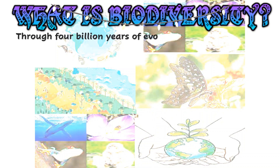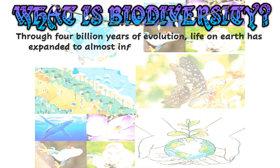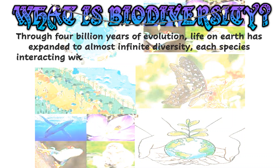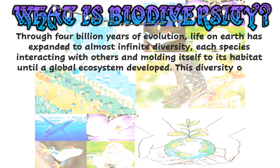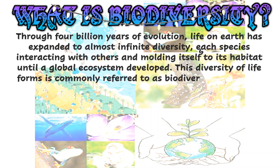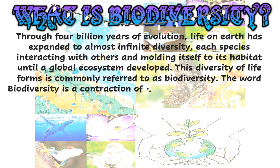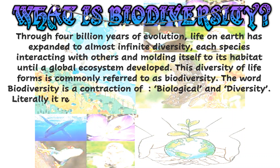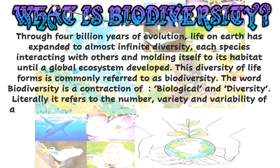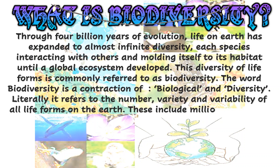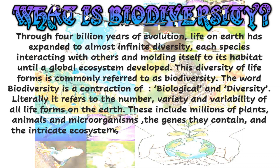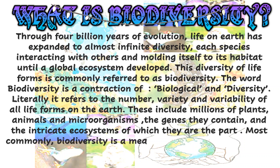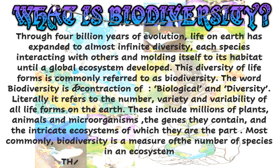What is biodiversity? Through four billion years of evolution, life on earth has expanded to almost infinite diversity, each species interacting with others and molding itself to its habitat, until a global ecosystem developed. This diversity of life forms is commonly referred to as biodiversity. The word biodiversity is a contraction of two words: biological and diversity. It refers to the number, variety, and all life forms on earth, including millions of plants, animals, and microorganisms, the genes they contain, and the intricate ecosystems of which they are a part. Most commonly, biodiversity is a measure of the number of species in an ecosystem.